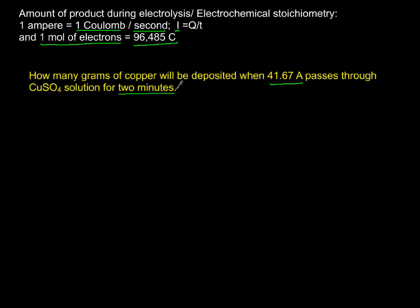The first thing we are going to do is find the charge in coulombs, which is simply the current times time in seconds. So I take 41.67 amperes, multiply it by two minutes which is 120 seconds, and what we get is about 5000 coulombs.